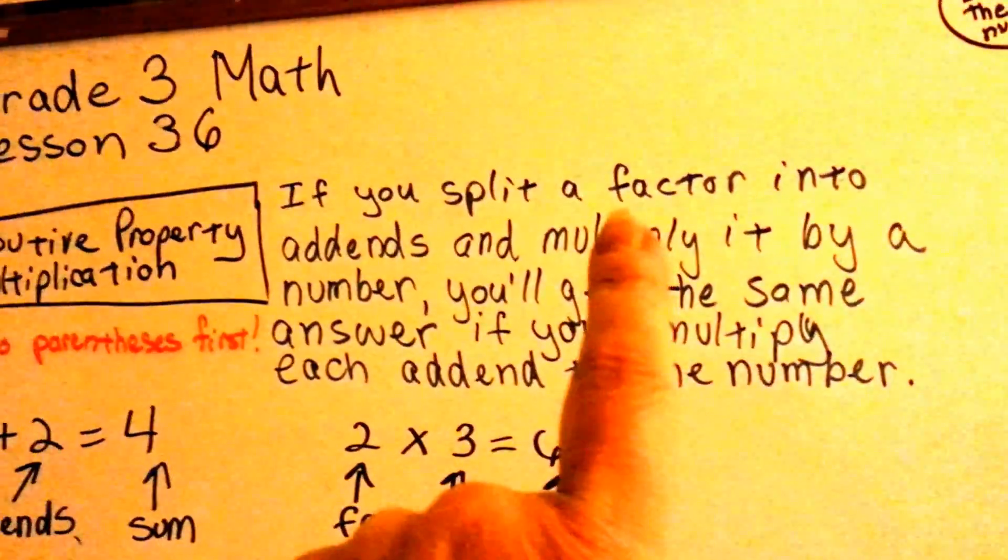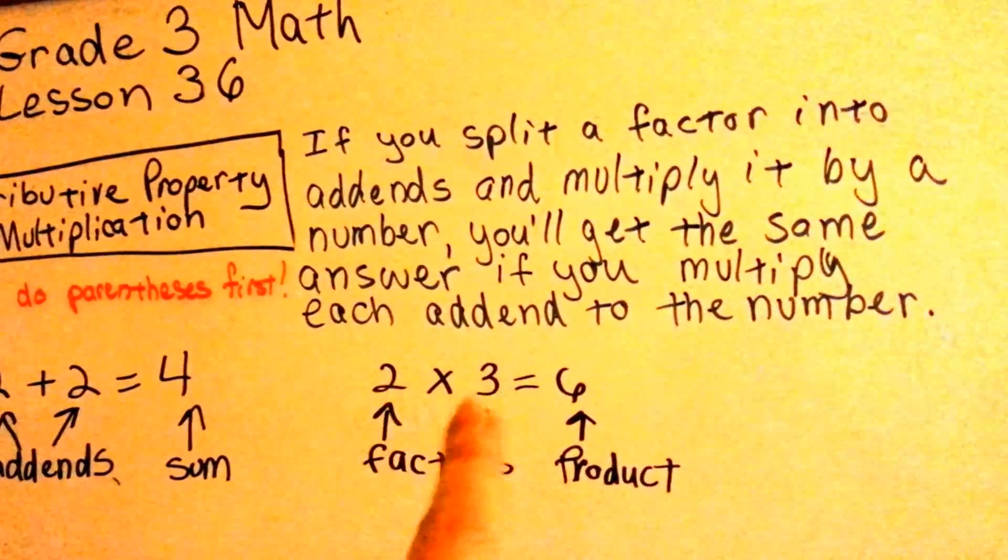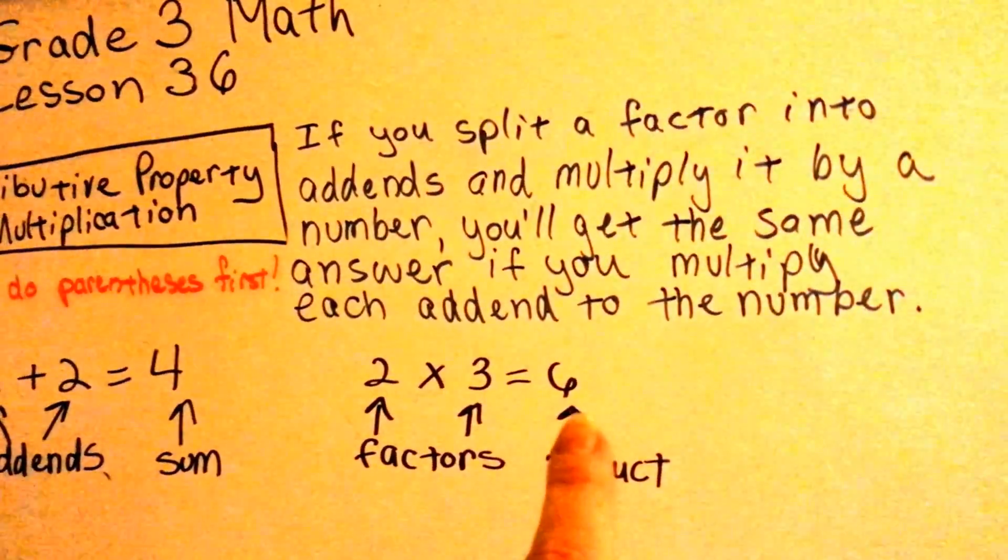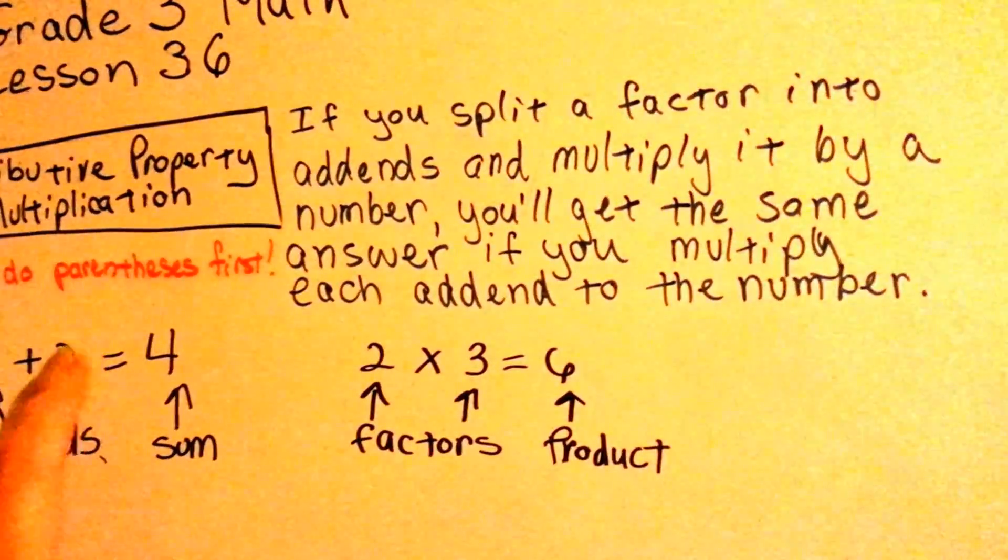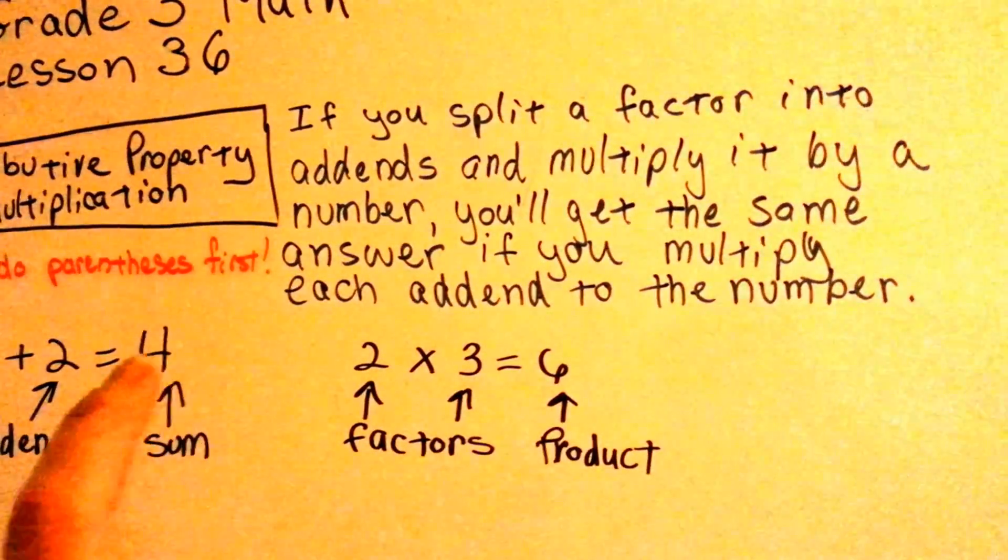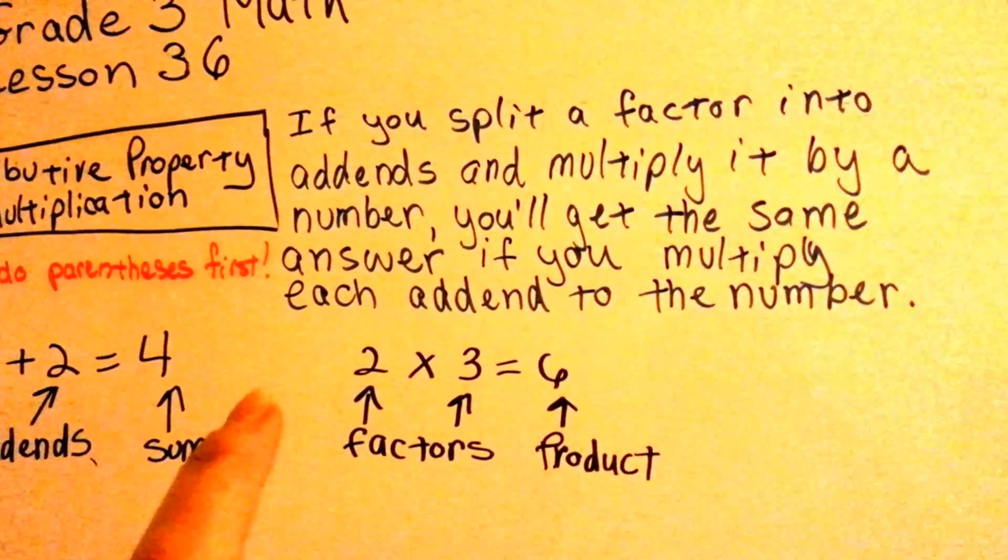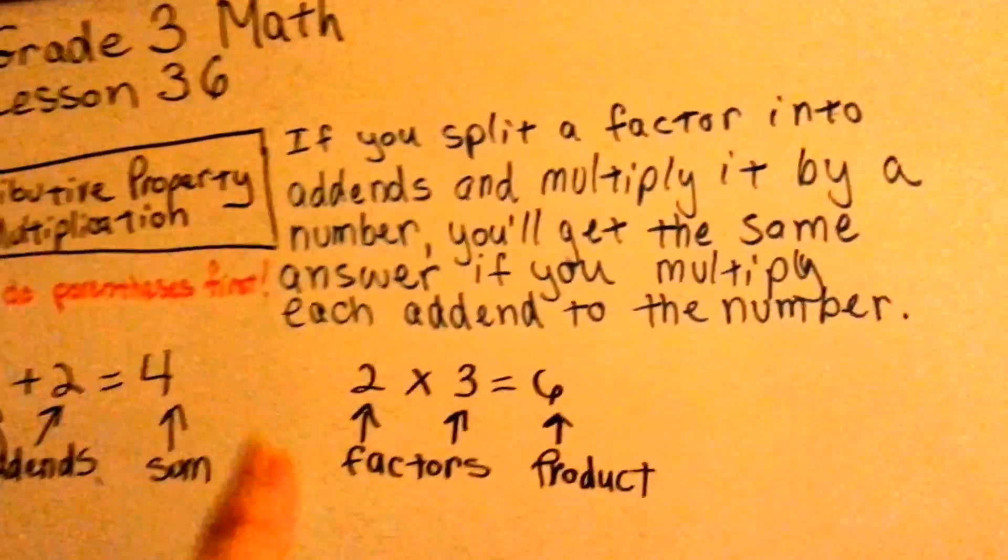If you split a factor—remember, that's a factor, the two things you multiply together to get the product, which is the answer—if you split a factor into add-ins, add-ins are numbers that you add together, and you multiply it by a number, you'll get the same answer if you multiply each add-in to the number. Now, what does that mean? Here's what it means.